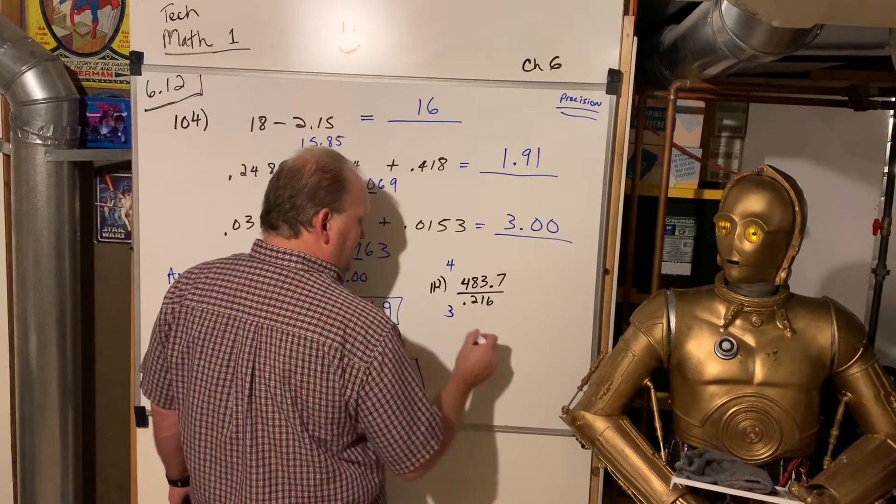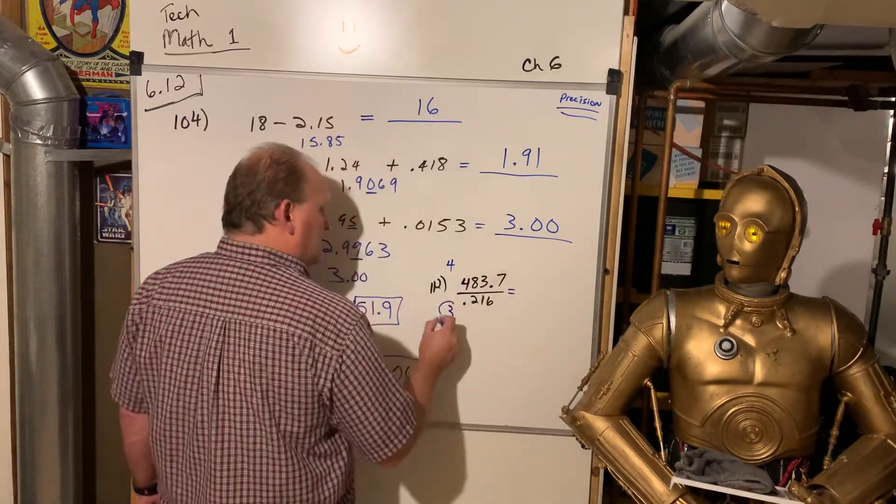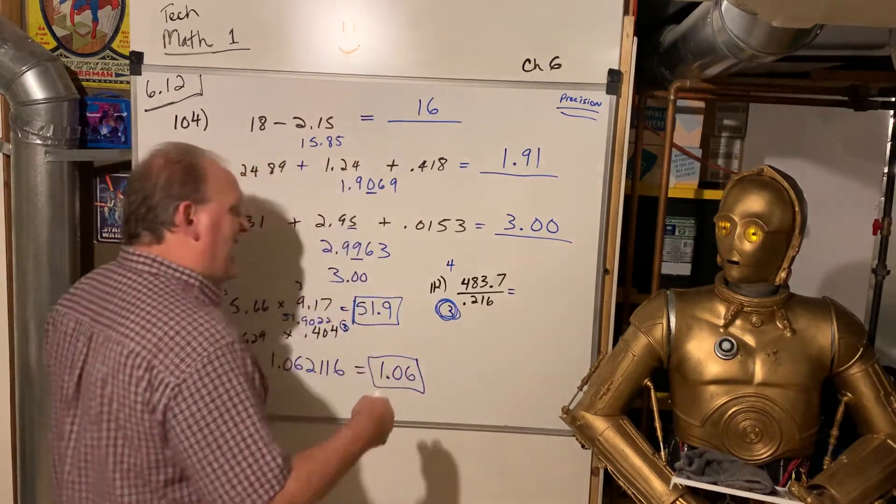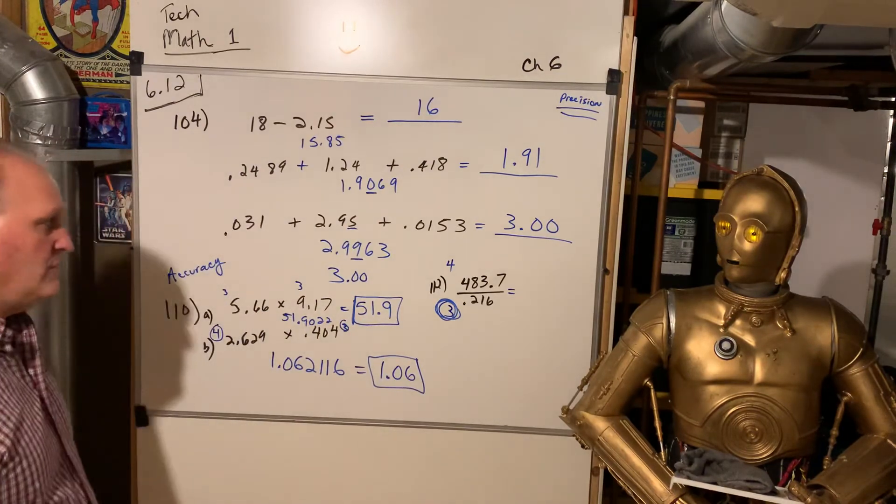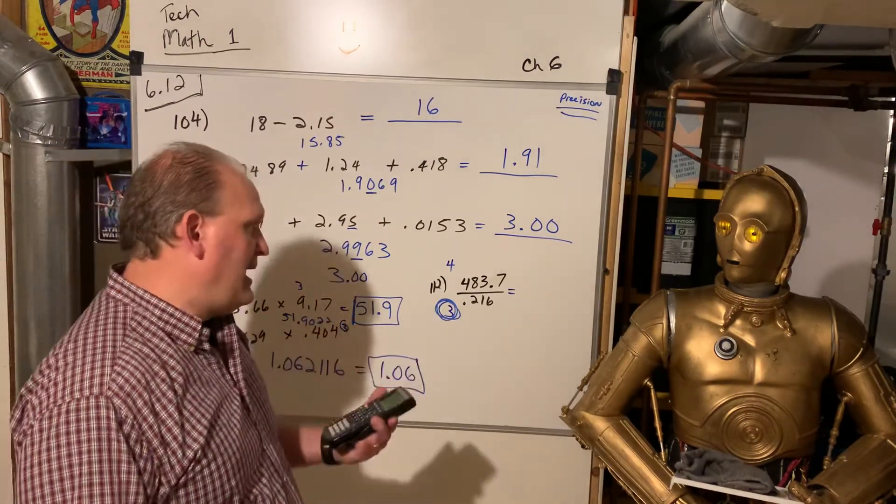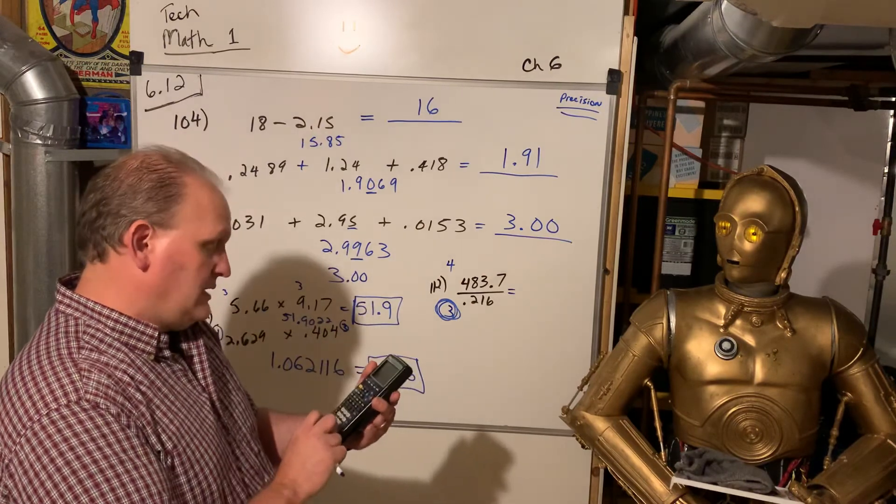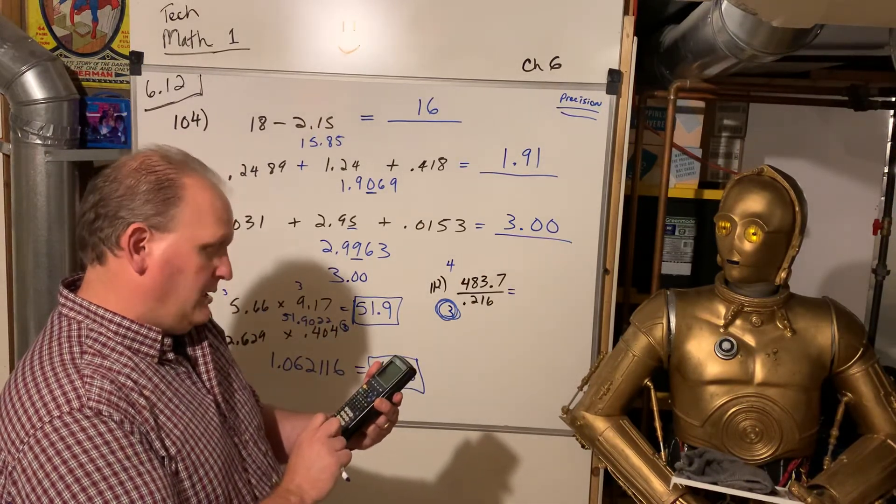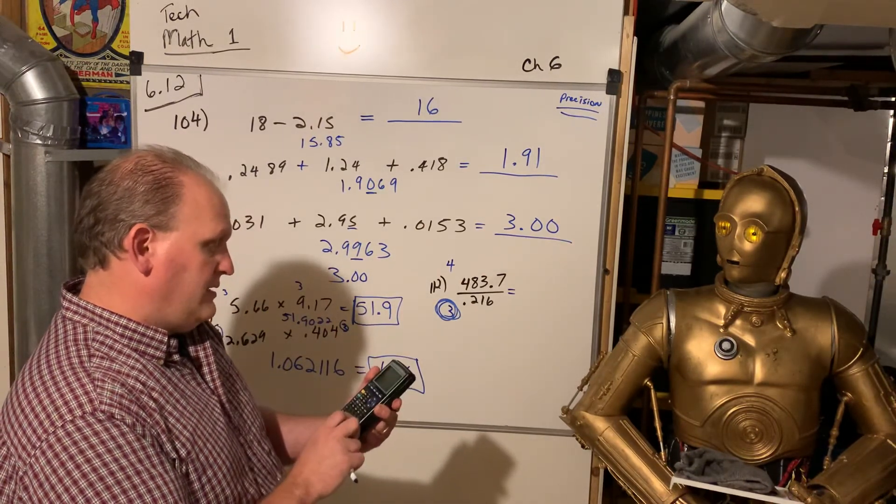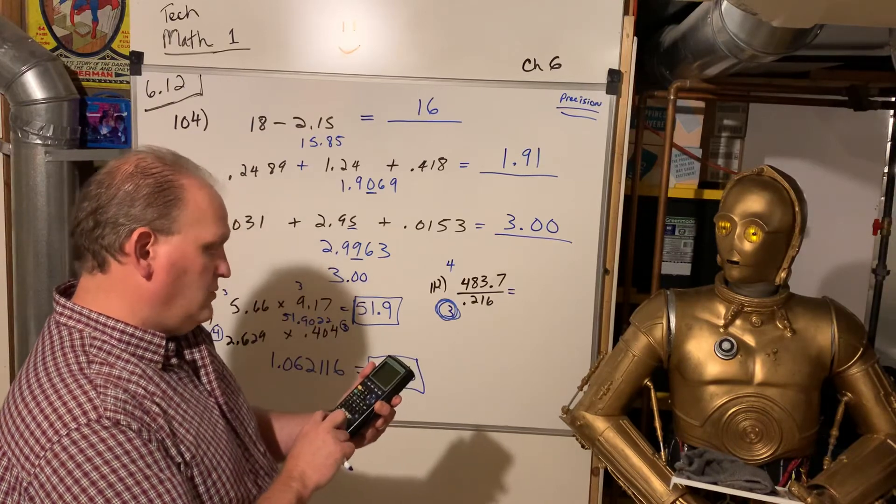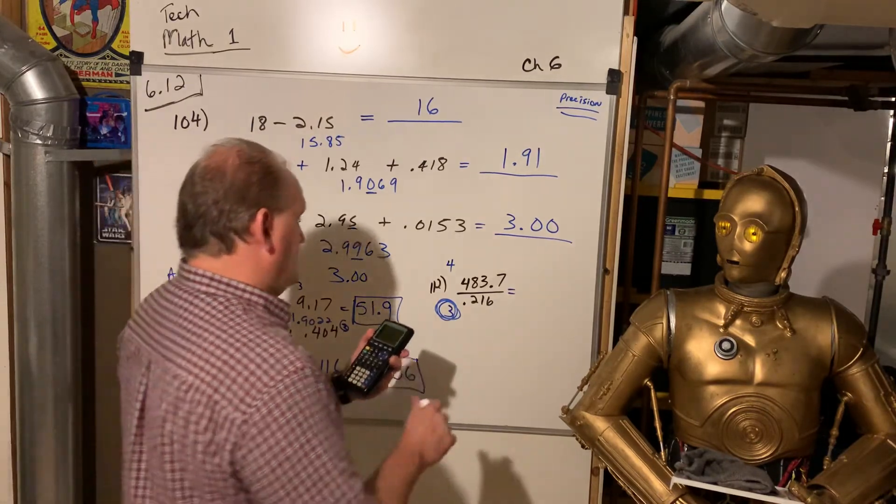1, 2, 3 significant digits on the denominator. I have to go with the least accurate measurement, the lowest accuracy. So, my answer has to only be 3 significant digits. So, 4, 8, 3.7 divided by 0.216 is this,